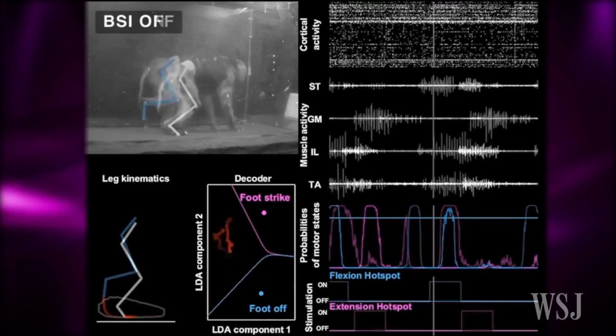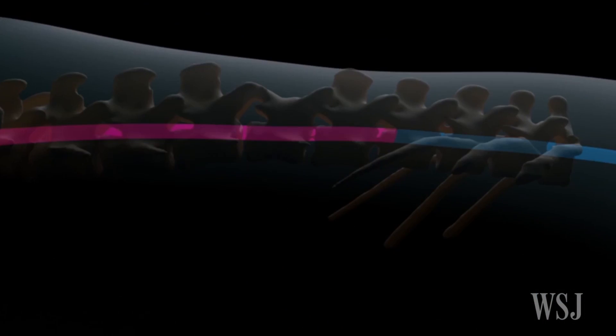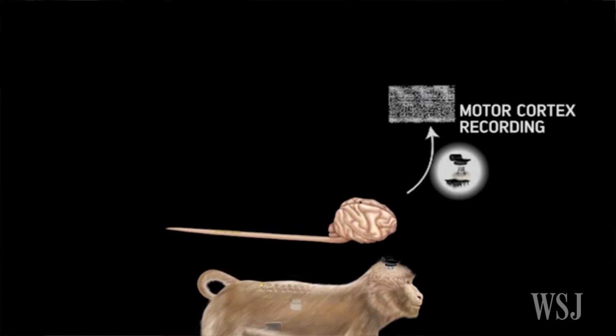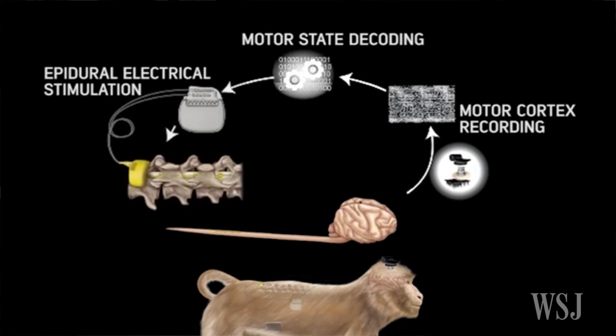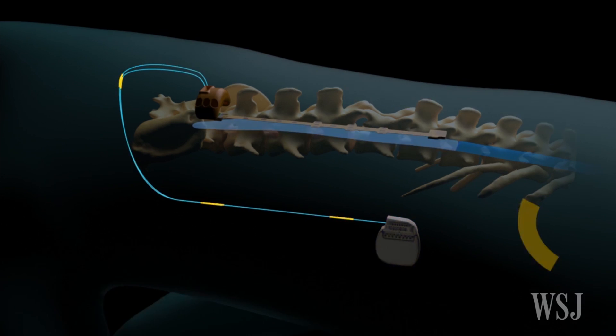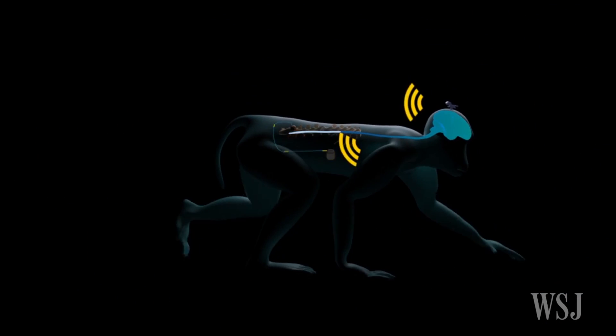Scientists at the Swiss Federal Institute of Technology say they've restored communication between the brain and the spinal cord of rhesus monkeys. They developed a brain-spinal interface that decodes motor intention from brain signals, bypasses the lesion, and sends this information to the spinal cord below the injury to reproduce the intended walking movement.